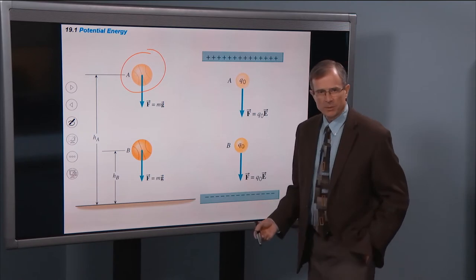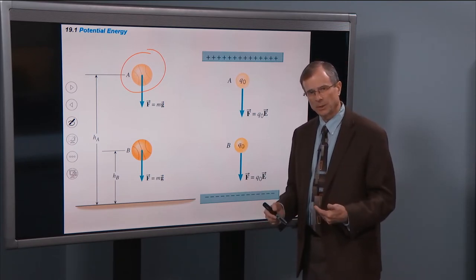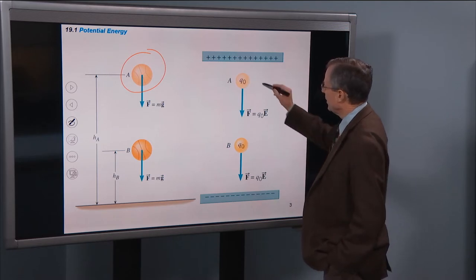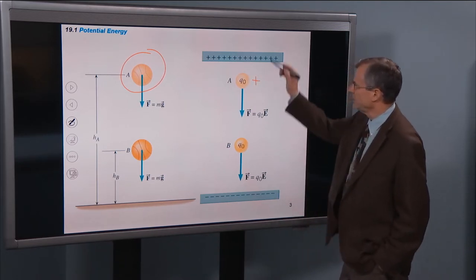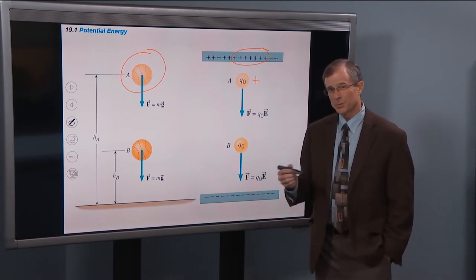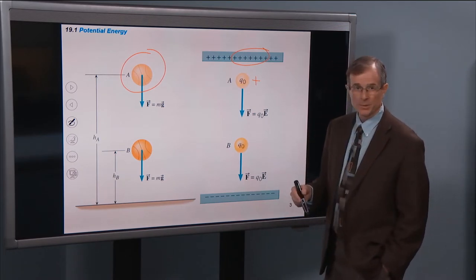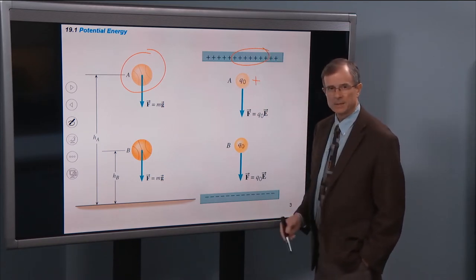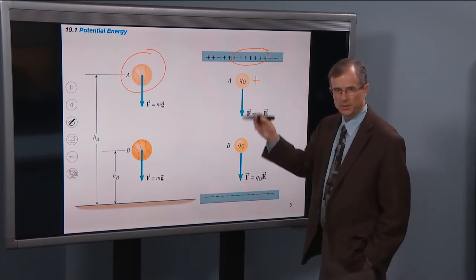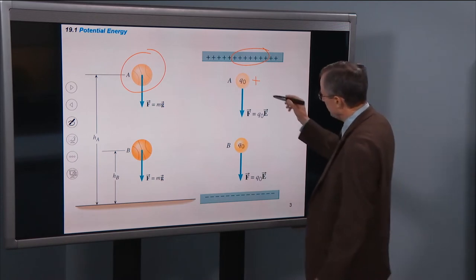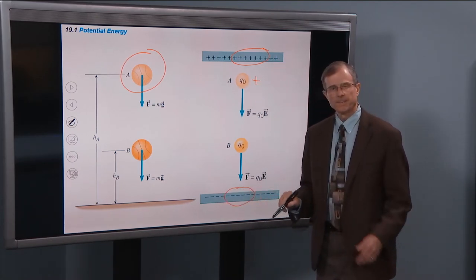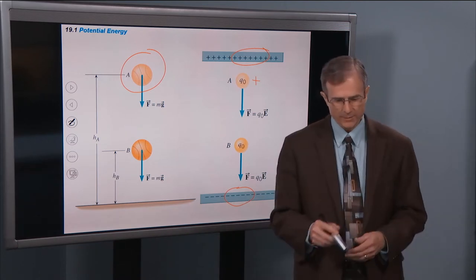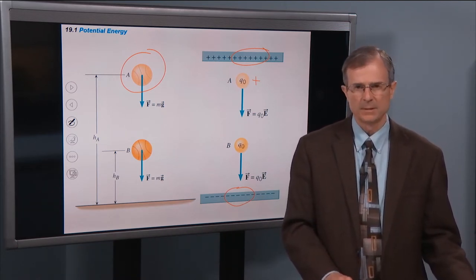We also get a similar situation with electric charges. There's electrical potential energy. If we have a positive test charge and it's close to some other positive charge, those are repelled. The two positive charges repel each other, and there's electric potential energy associated with that positive charge being nearer to the other positive charge. And as the positive charge moves towards some negative charge, its electric potential energy decreases — in the same way that the basketball's gravitational potential energy decreases as its height decreases.